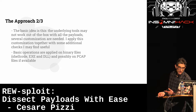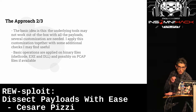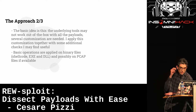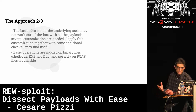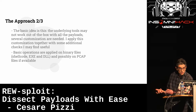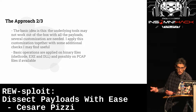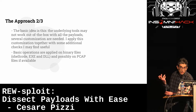The basic idea is that Unicorn Engine and Mandiant SpeakEasy are generic tools — not built for specific payloads — so if you try to use them out of the box, they probably won't work as expected. This is where RE-sploit comes in: it builds a set of helpers and harnesses around these tools to complete the emulation and extract artifacts.